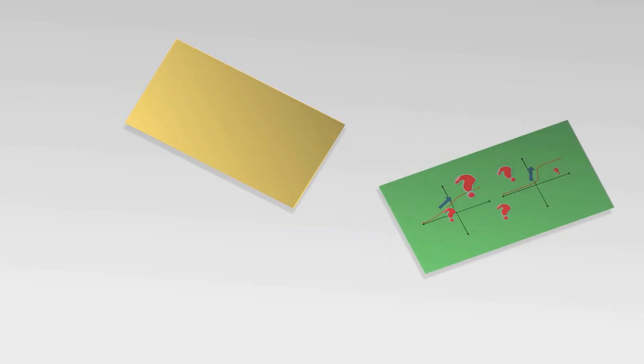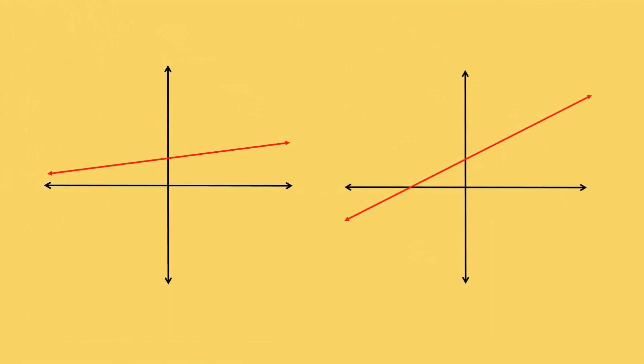So let's take a step back. If these two functions were lines this would be a much easier problem. When we are working with lines we can use the notion of slope to accurately describe how quickly a line is increasing or decreasing.